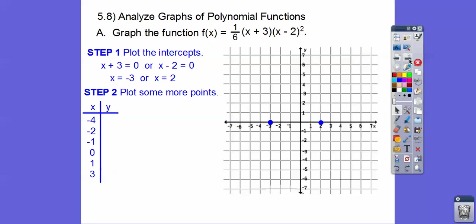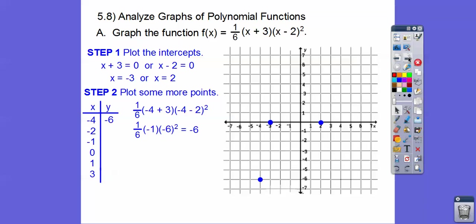Let's put in x = -4. Negative 4 plus 3 is -1. Negative 4 minus 2 is -6. So we get -1 times (-6)² = -1 times 36 = -36. Then (1/6) of that is -6. So when x = -4, y = -6, which is down here.